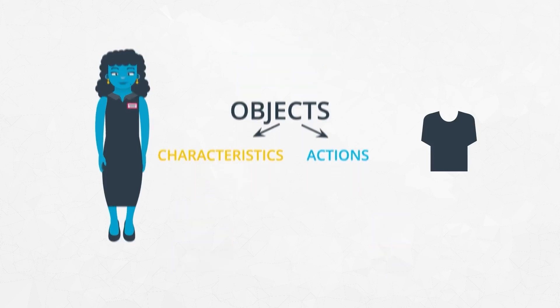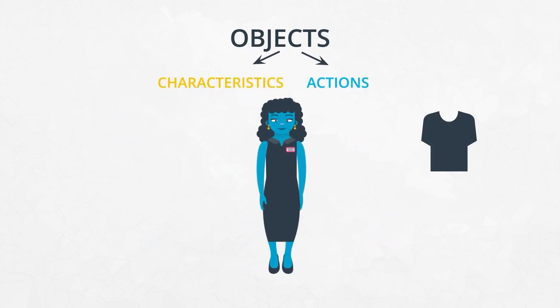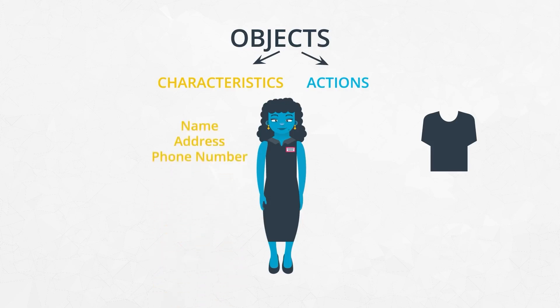For example, a few characteristics of a salesperson would include the person's name, address, phone number, and an hourly pay. In terms of what a salesperson could do, that might include selling an item or taking an item from a warehouse.